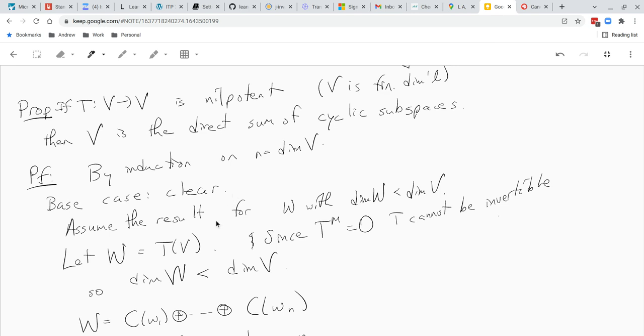So now let's assume the result for, we're given a vector space V and we'll assume that the result is true for all W's which have dimension less than the dimension of V. And now we'll let W be the range of T.